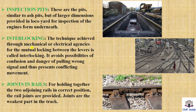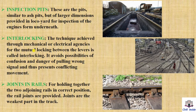Interlocking. The technique achieved through mechanical or electrical agencies for the mutual locking between levers is called interlocking. We studied CTC — the centralized traffic control room — in the previous lecture, part 3. Interlocking avoids possibilities of confusion and the danger of pulling wrong signals, thus preventing conflicting movements.